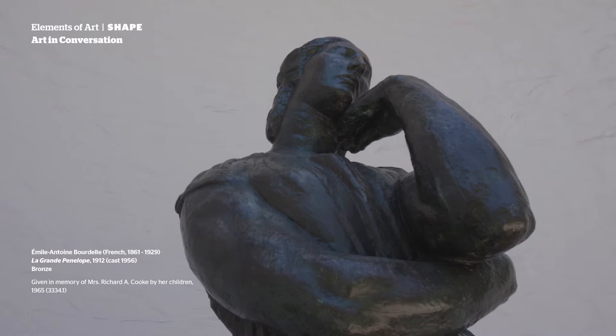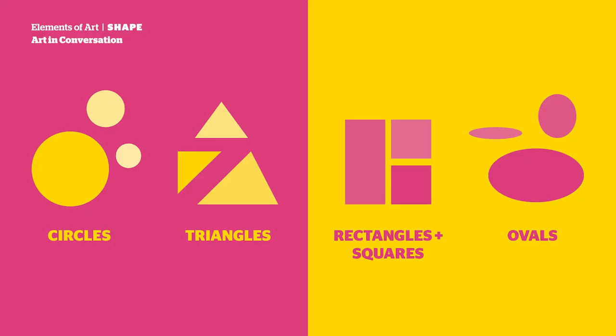Shapes are everywhere. There are an infinite number of shapes. Shapes such as circles, triangles, rectangles, squares, and ovals are labeled regular or geometric.